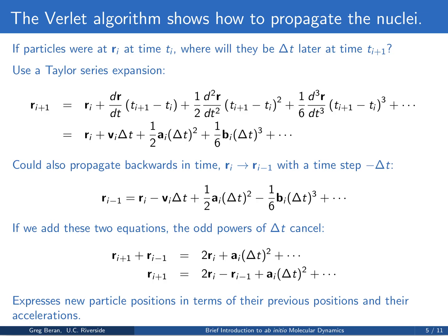If we add these two equations, the terms with odd powers of delta T cancel. We get R_{i+1} plus R_{i-1} equals 2 R_i plus the acceleration times delta T squared, plus higher-order terms involving delta T to the fourth, delta T to the sixth, etc. Rearranging and solving for R_{i+1} gives 2 R_i minus R_{i-1} plus the acceleration times delta T squared plus higher-order terms. In other words, we express the new particle positions at R_{i+1} in terms of positions at previous time steps and their accelerations.